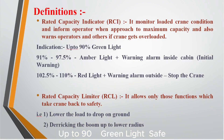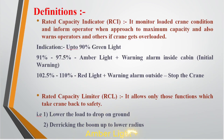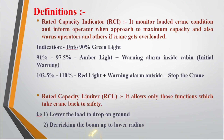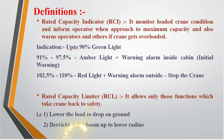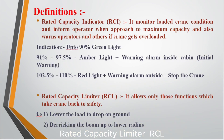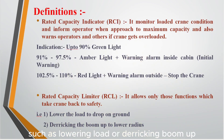RCI thresholds: up to 90% — green light, safe. 91% to 97.5% — amber light plus cabin alarm, initial warning. 102.5% to 110% — red light plus outside alarm, overload, stop crane. Rated Capacity Limiter (RCL): allows only safe functions to bring the crane back to safety, such as lowering the load or derricking the boom up.